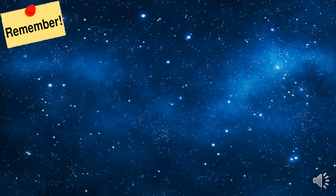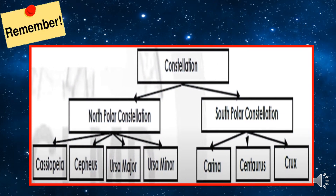Remember that constellations have north polar constellations and south polar constellations. For the north polar constellations, we have Cassiopeia, Cepheus, Ursa Major, and Ursa Minor. For the south polar constellations, we have Carina, Centaurus, and Crux.